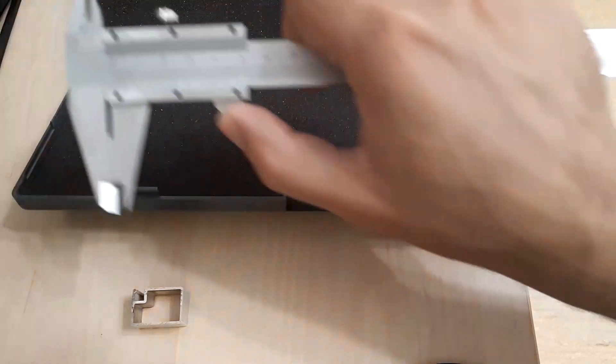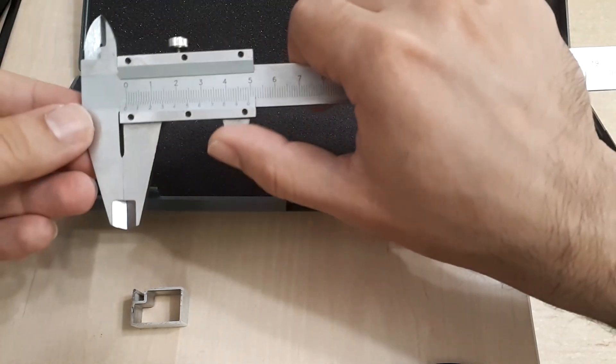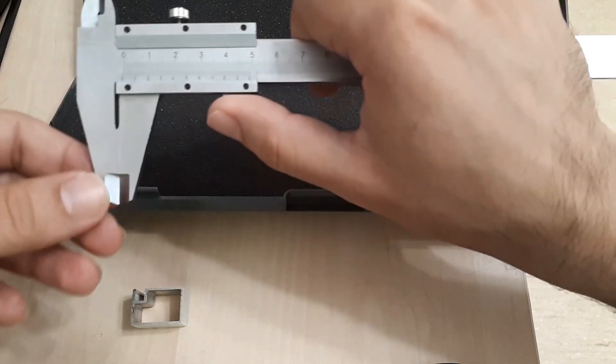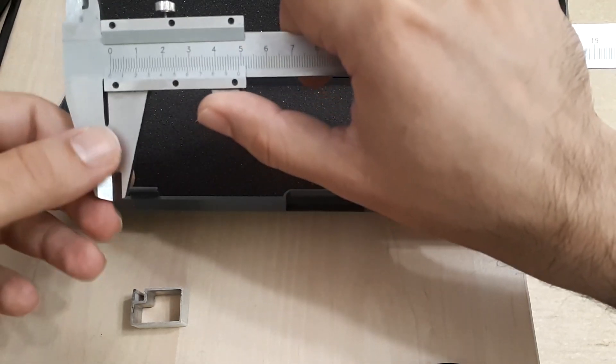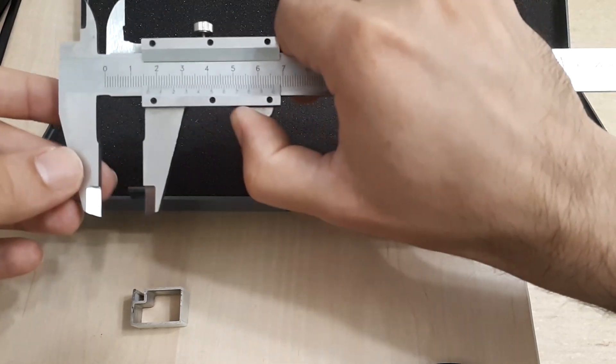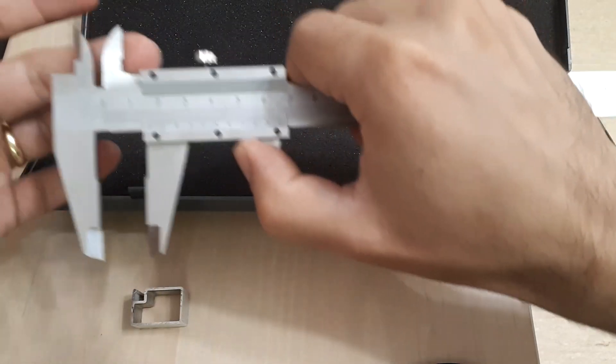However, each and every time you are going to use such a device you have to think about what kind of measurement you are going to take. You can take the dimension for the internal part of an object and in this case you are going to use the upper part, the external dimension and in this case you are going to use the lower side.